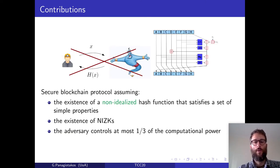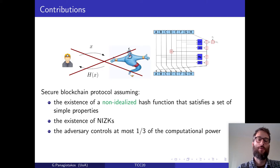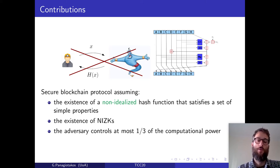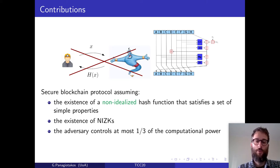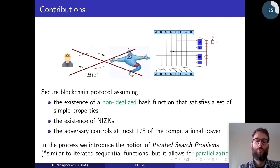We answer this question in the affirmative. We design a blockchain protocol that is proven secure, assuming first the existence of a non-idealized hash function that satisfies a set of three simple properties; secondly, the existence of non-interactive zero-knowledge proofs; and thirdly, that the adversary controls at most one-third of the computational power. In the process of doing that, we introduce the notion of iterated search problems.